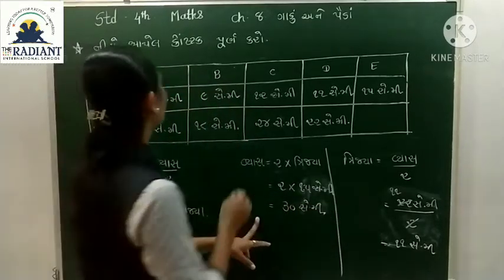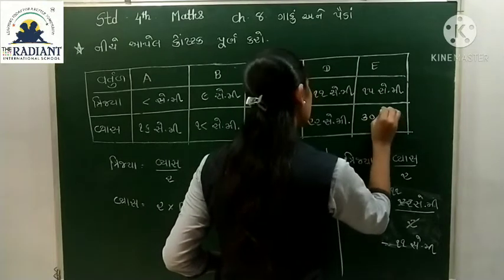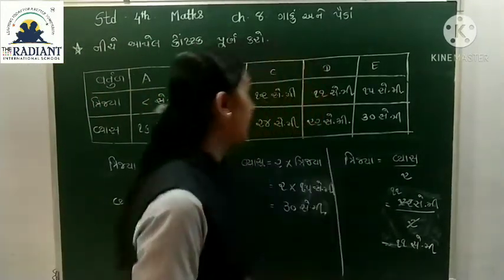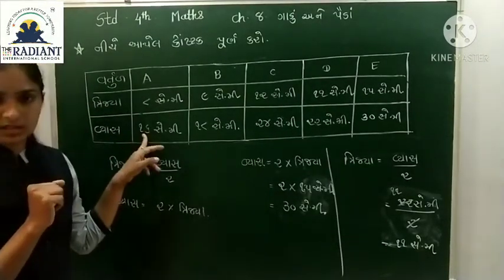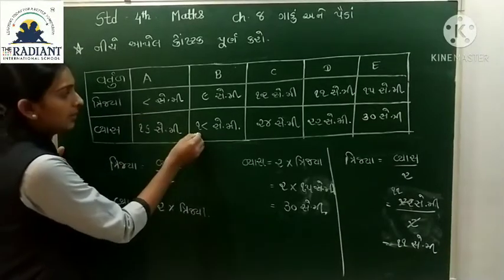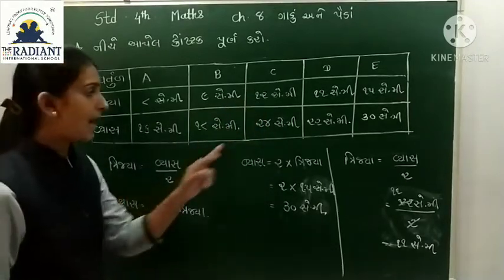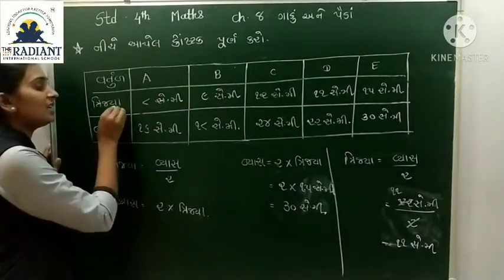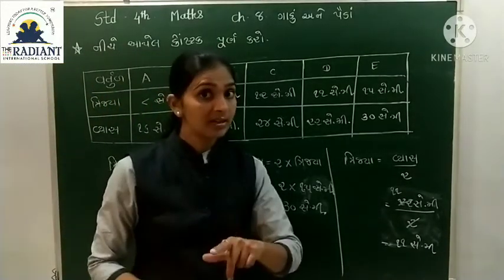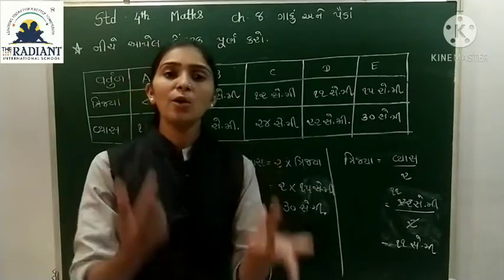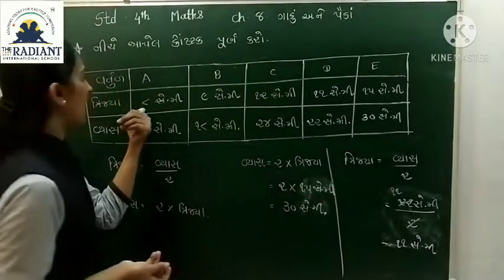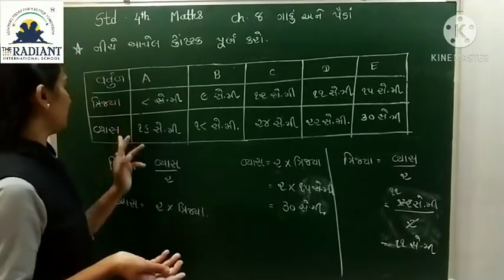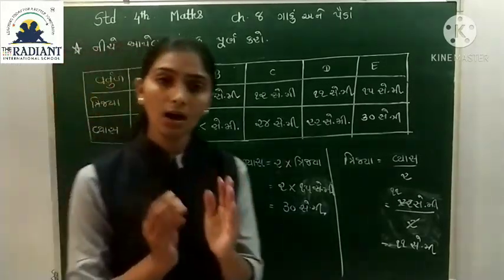22 ના અર્ધા 11 અને 30 ના અર્ધા 15 - આ ઉત્તરો સાચા છે, કારણ કે ત્રિજ્યા એ વ્યાસ કરતાં અર્ધી છે. એટ્લે વ્યાસ એ ત્રિજ્યા કરતાં બમણો છે, અને ત્રિજ્યા એ વ્યાસ કરતાં અર્ધી છે.